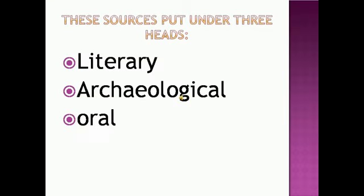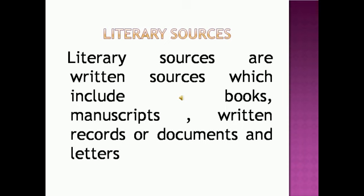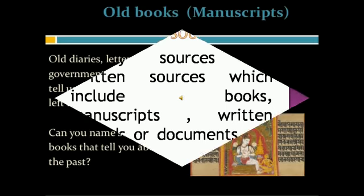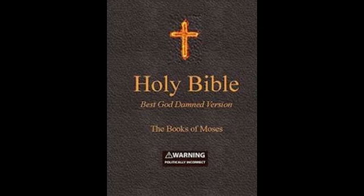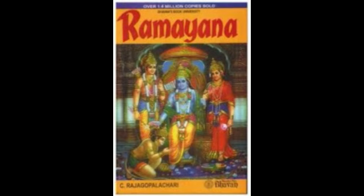Let us look at these sources in detail. These sources are put under three heads: the literary sources, the archaeological sources, and the oral sources. Literary sources are written sources which include books, manuscripts, written records or documents, and letters. These are one of the most reliable and useful sources of history.